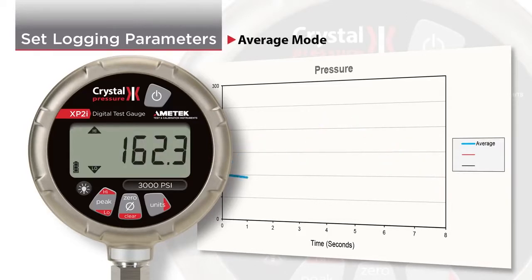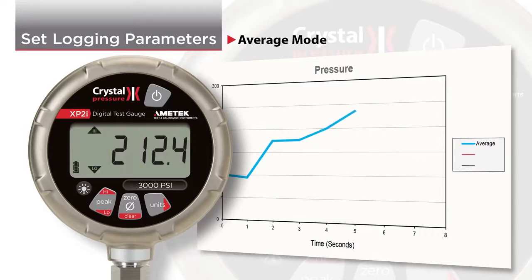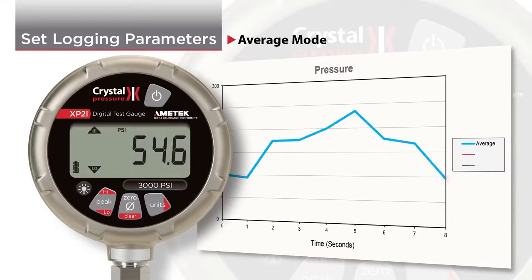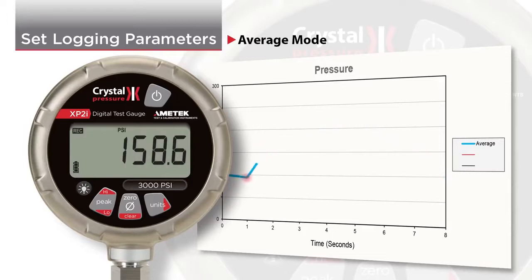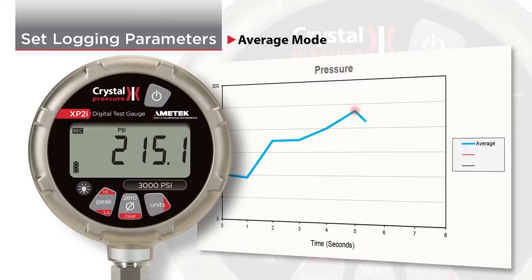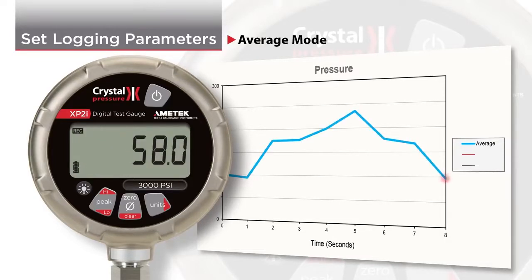Average mode works as follows. Data Logger XP will record data at the logging interval you've selected. The XP2i updates at four readings per second, so average mode will record the average of all the readings taken between logging intervals.